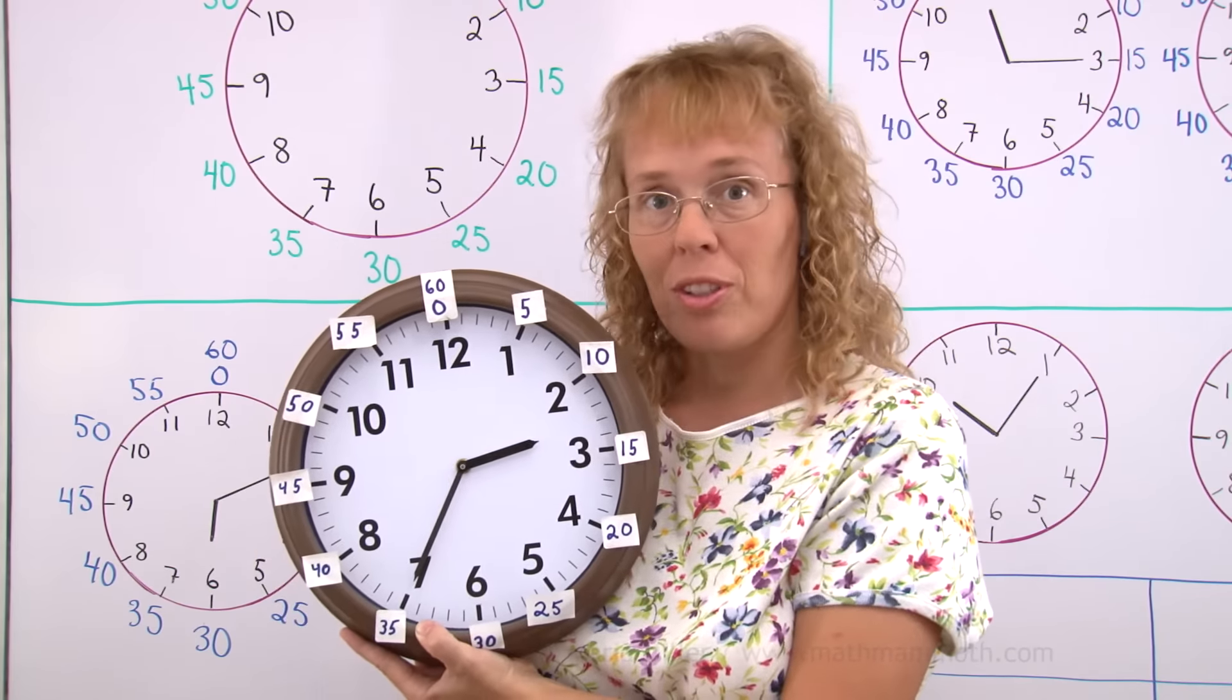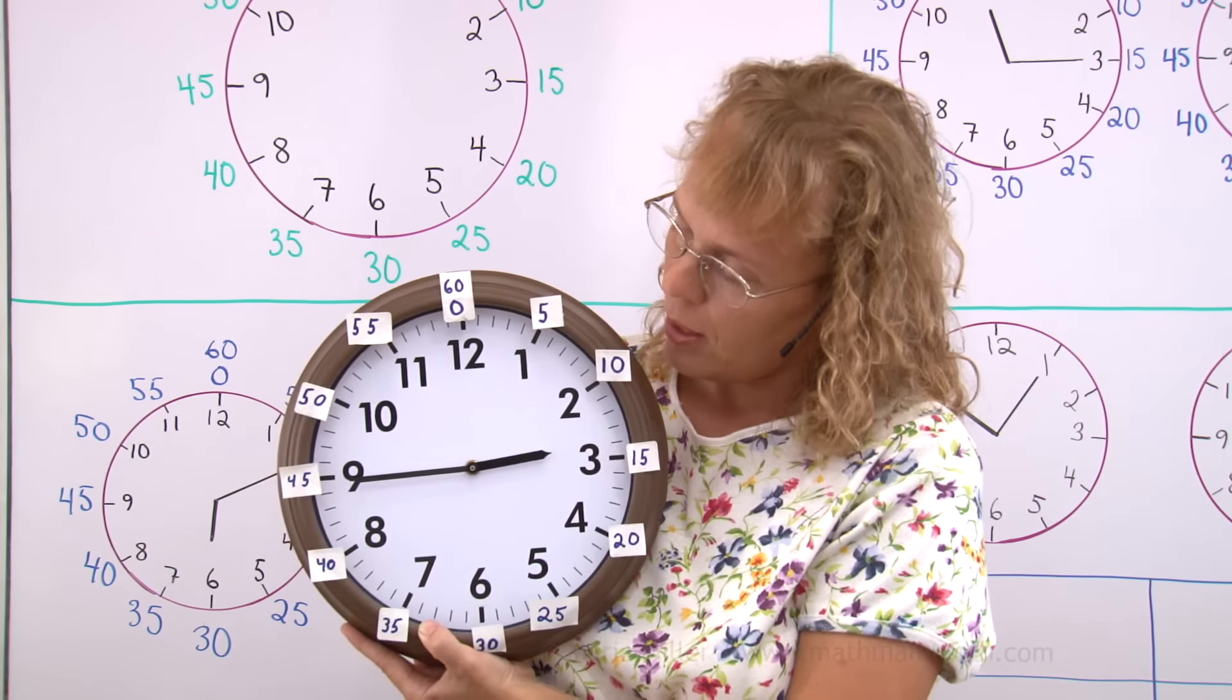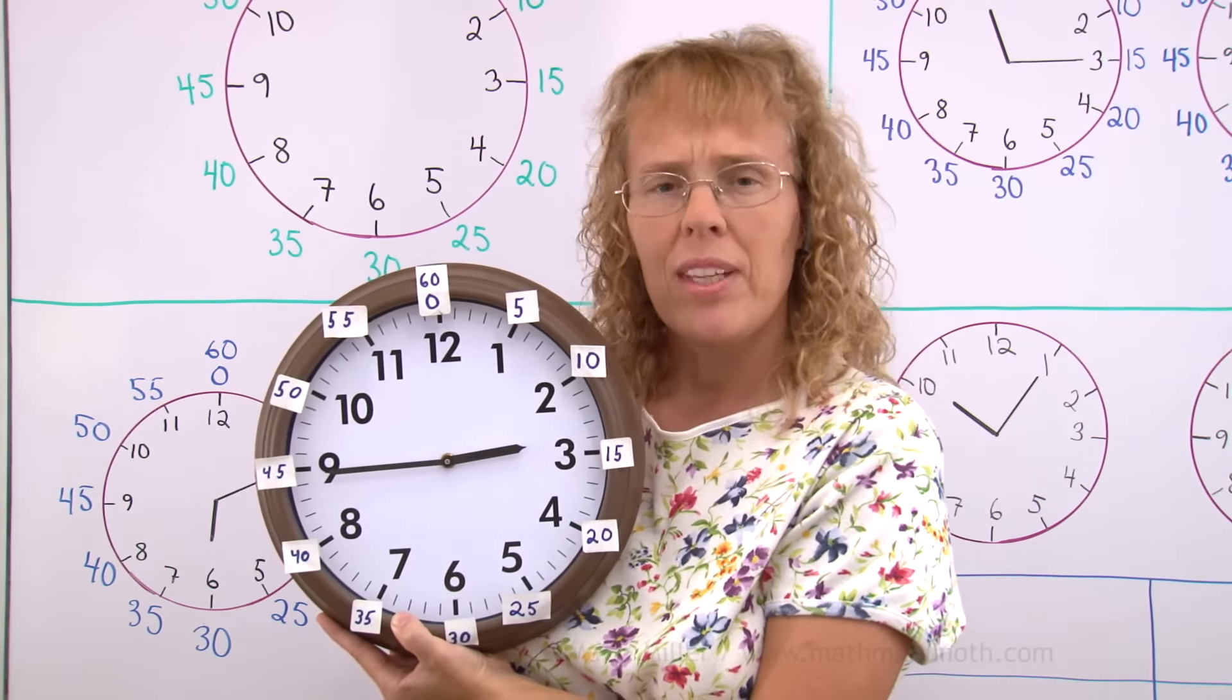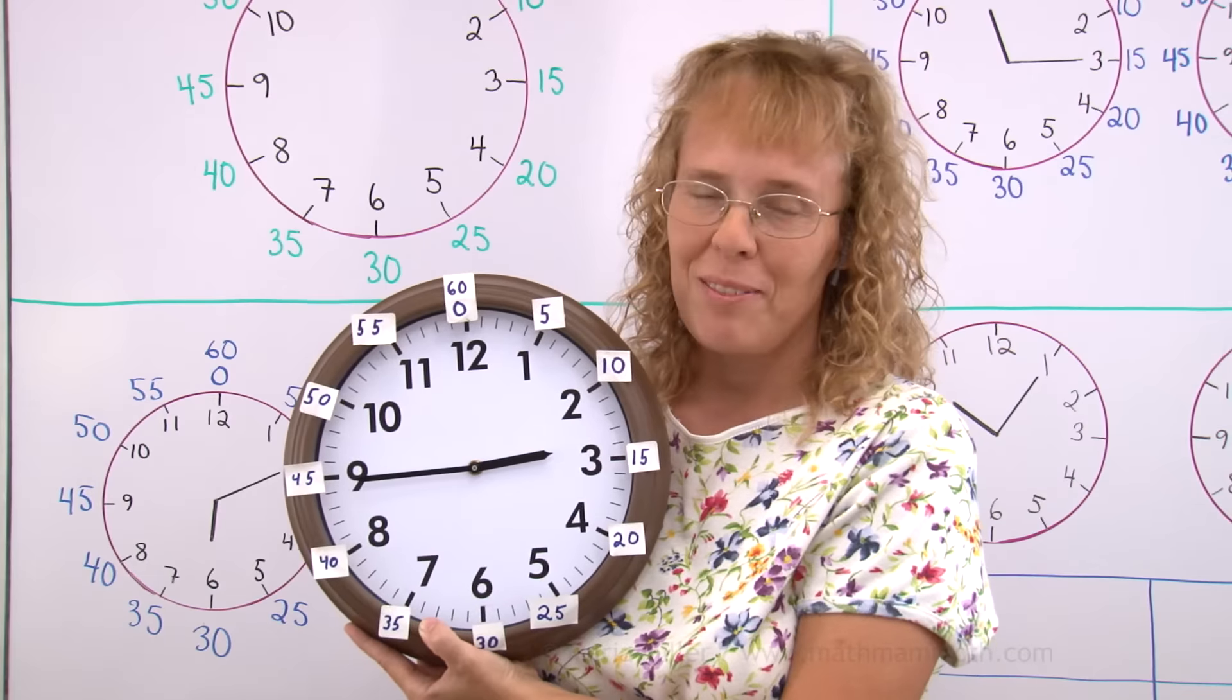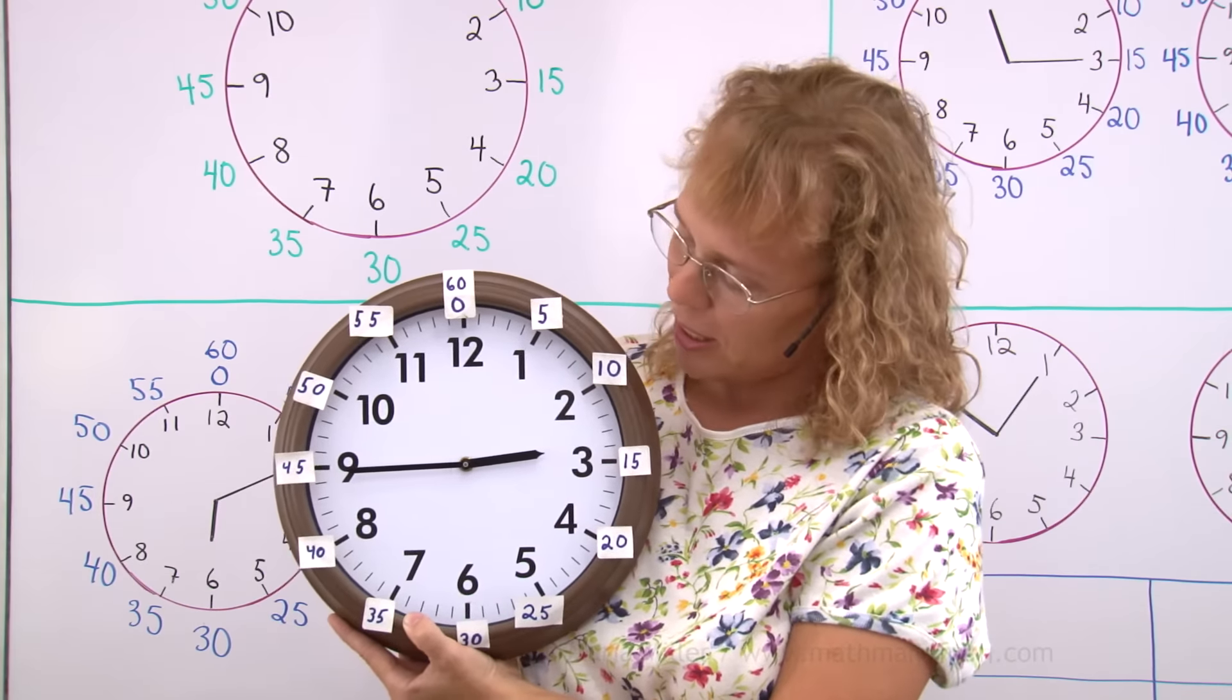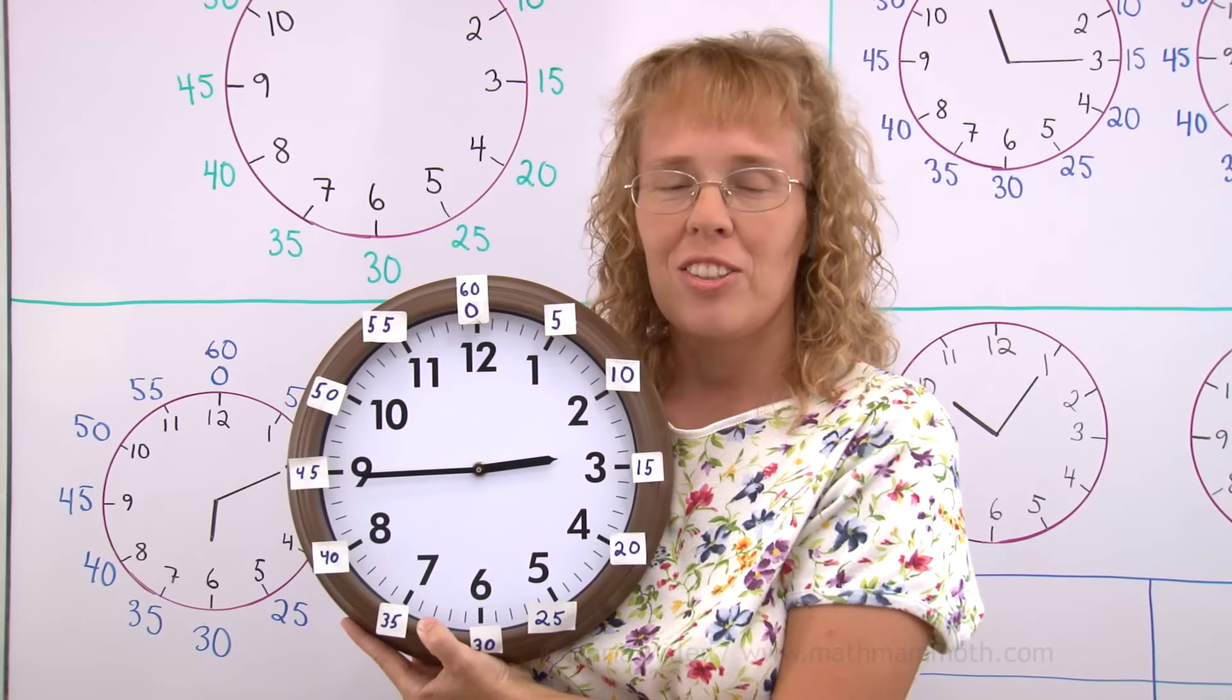And 2:35, 2:40, 2:45. Notice the hour hand now. It is getting very close to three. So some children get mistaken and think that this is 3:45. But it is not yet.